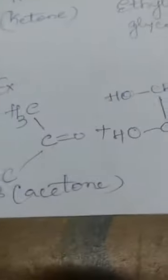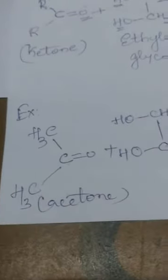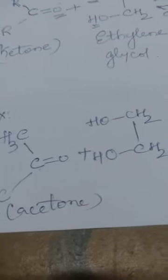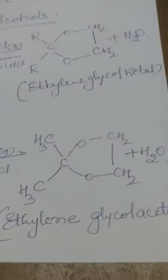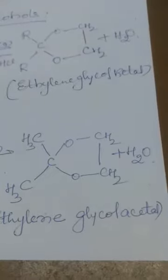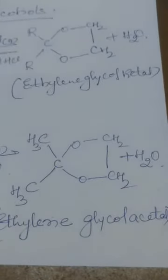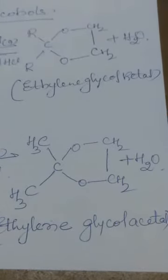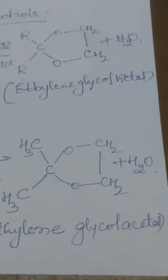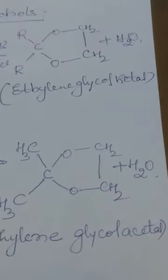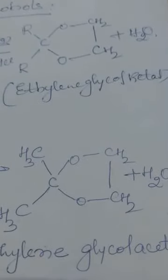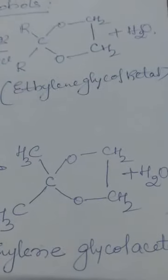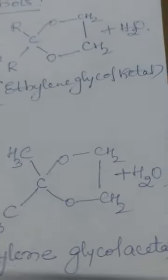Taking acetone as an example, acetone reacts with the dihydric alcohol ethylene glycol in the presence of HCl gas to give the product ethylene glycol acetal plus H2O. These are the different addition reactions — the same set discussed in aldehydes.